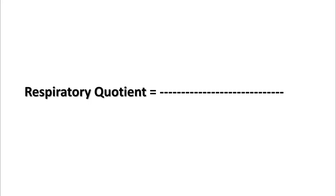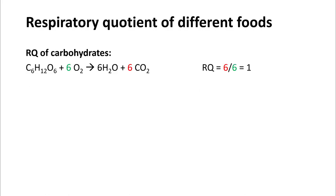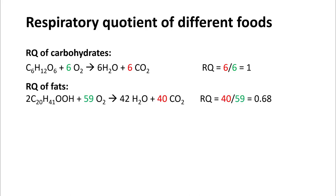Before we begin, one term you have to know is the respiratory quotient, which is the ratio of CO2 produced to O2 used. The respiratory quotient of carbohydrates is one, because it releases six carbon dioxide molecules and uses six oxygen molecules to completely metabolize the glucose molecule. Any other carbohydrate has a similar respiratory quotient.